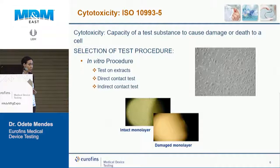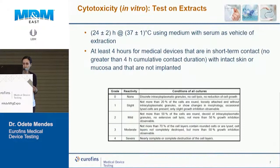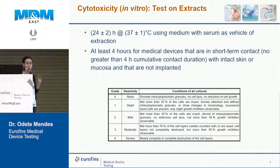There are three large categories of test procedures for cytotoxicity: extract-based, direct contact, and indirect contact. An extract is prepared by placing your medical device in cell culture medium and incubating it at 37°C for 24 hours ±2 hours. There are other conditions based on device type and regulatory endpoints, but in general 24 hours at 37°C gives you your extract. The extract is then placed in contact with a cell monolayer for at least four hours.